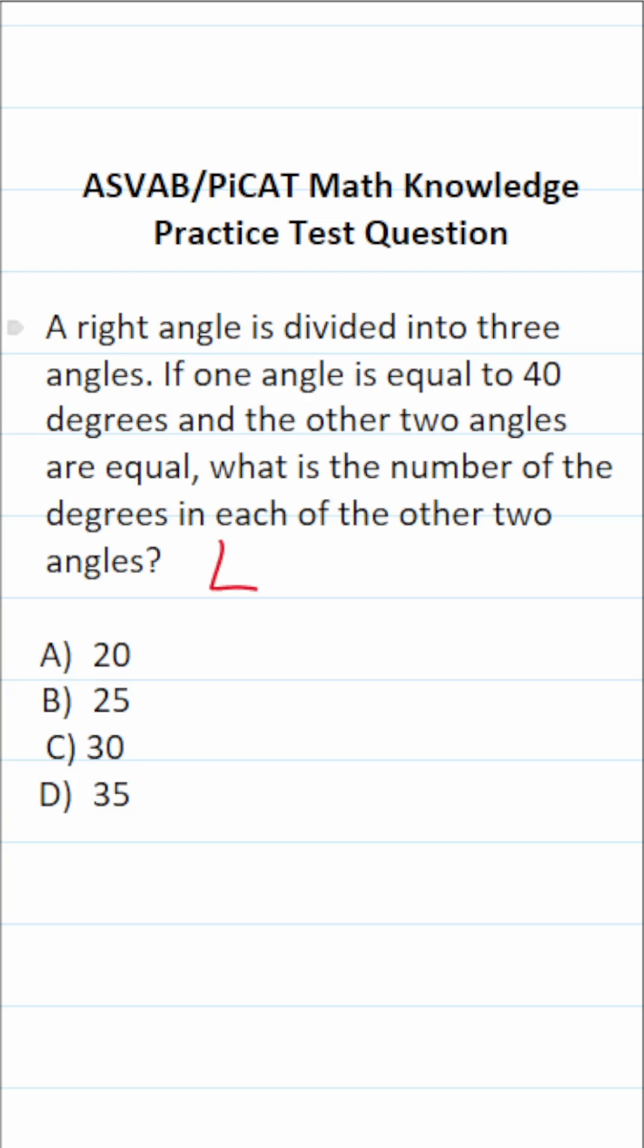So first of all, you have to know that a right angle is equal to 90 degrees. Apart from that, it might be helpful to make a quick sketch to figure this one out.